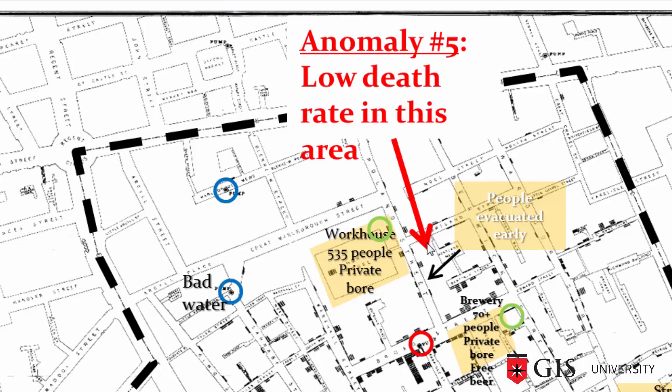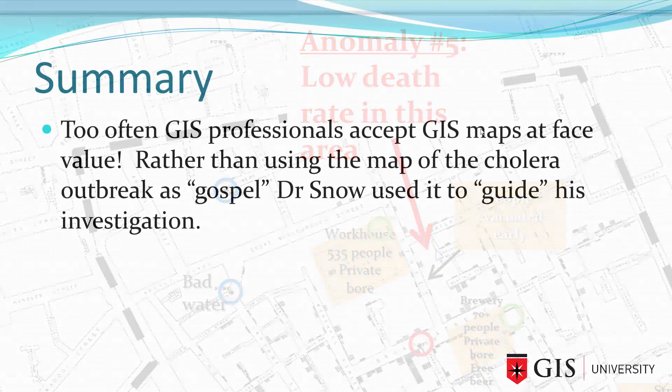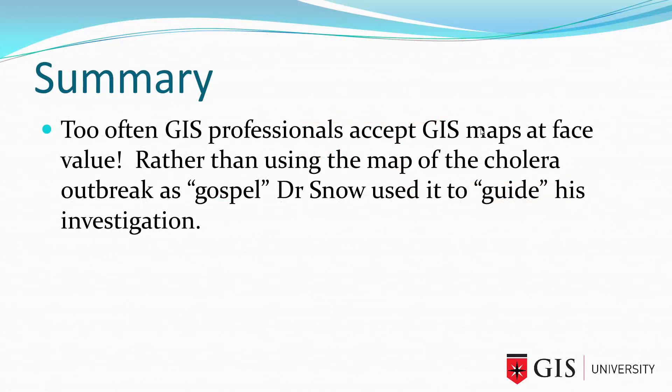That's another really important lesson for people looking at study design, and it's why social researchers should always use strict data collection methodologies. To sum up, there are so many parallels between this study and the way you would repeat it using a GIS. The important thing is that rather than using the map of the cholera outbreak as gospel, Dr. Snow used it as a guide for his investigation. Field work is often such an important part of GIS mapping projects, and too many GIS professionals accept maps at face value when they shouldn't.